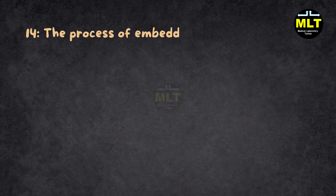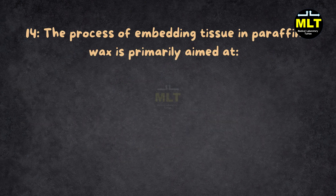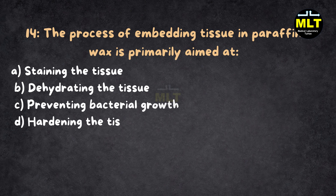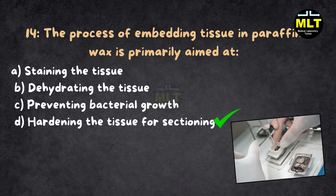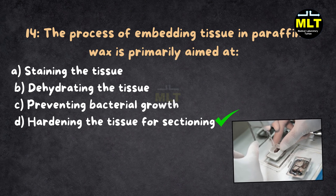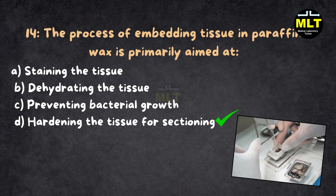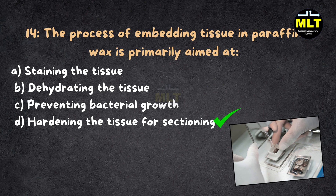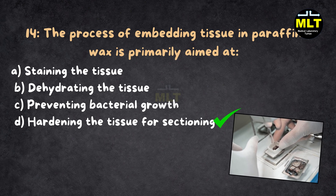Question 14: The process of embedding tissue in paraffin wax is primarily aimed at — Options: A. Staining the tissue, B. Dehydrating the tissue, C. Preventing bacterial growth, D. Hardening the tissue for sectioning. Correct Answer: D. Hardening the tissue for sectioning. Explanation: Embedding tissue in paraffin wax is crucial for hardening the tissue, allowing for very thin sections to be cut for microscopic examination. This step follows dehydration and clearing, ensuring the tissue is stable for slicing.